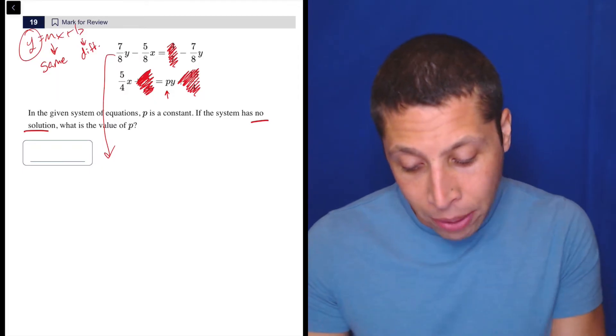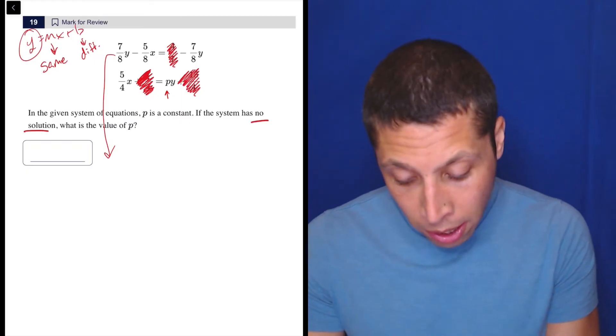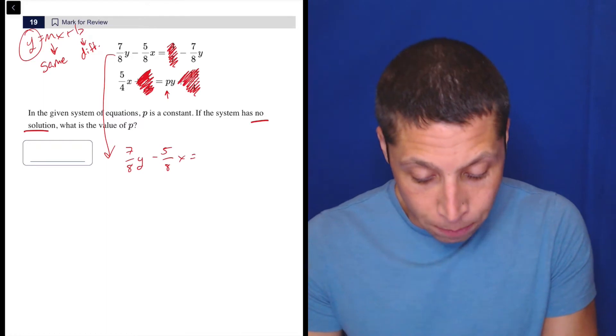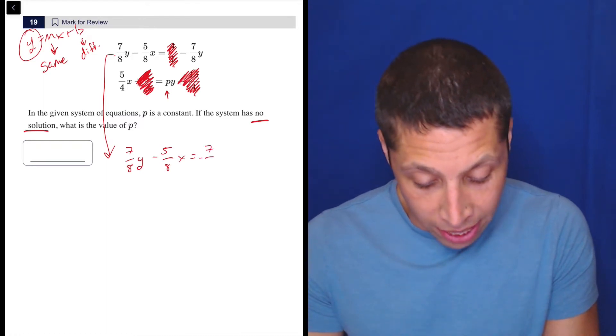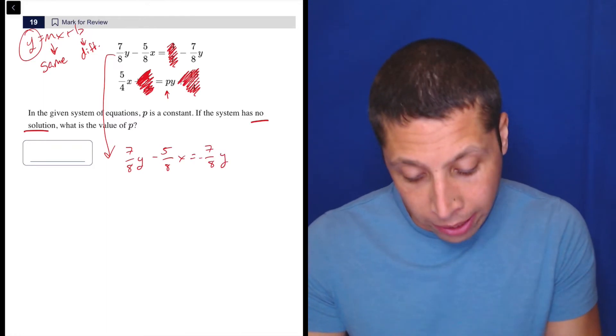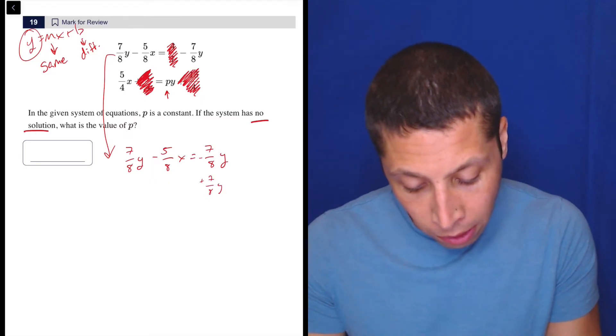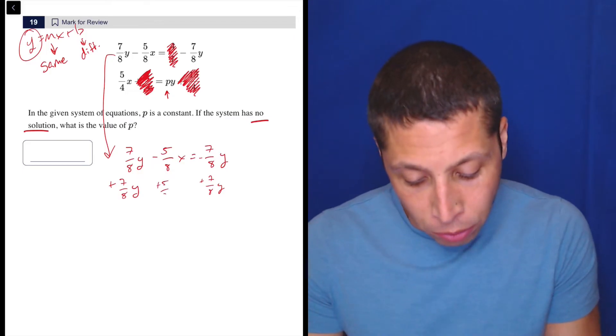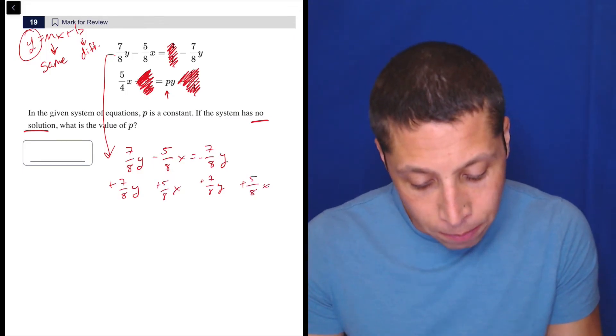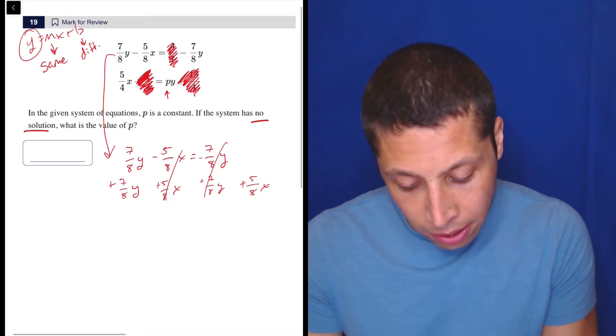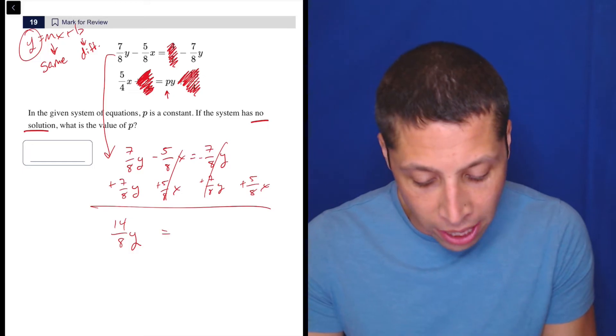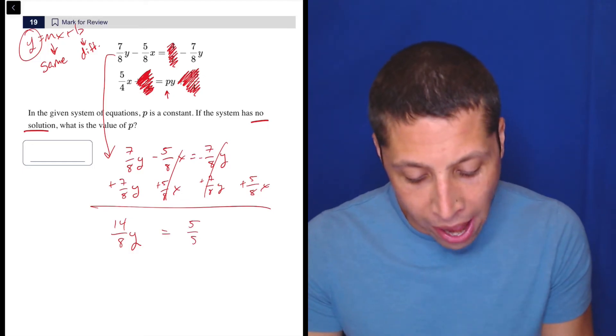What I would do here is I would subtract the seven-eighths from the left side. So we're going to do seven-eighths y minus five-eighths x. Actually, let's add this part over, plus seven-eighths y, that way we can get the y on that side. We don't have to worry about the negatives. This is going to add five-eighths to this side. So this cancels, this cancels, and this is going to leave us with 14-eighths y. I'll reduce that in a second. That is equal to five-eighths x.